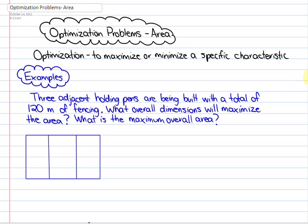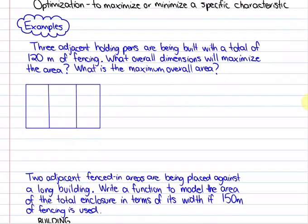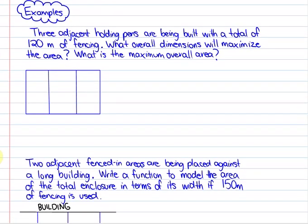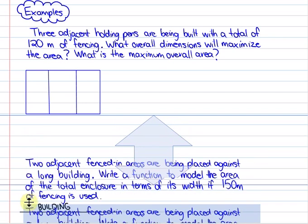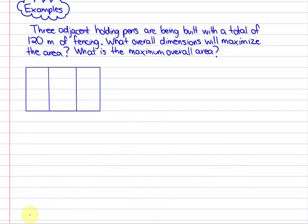Let's look at a particular problem and how we can solve it using quadratic functions. In this first example it says three adjacent holding pens are being built with a total of 120 meters of fencing. What overall dimensions will maximize the area? What is the maximum overall area?